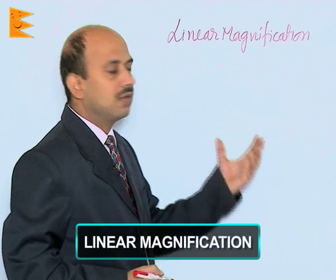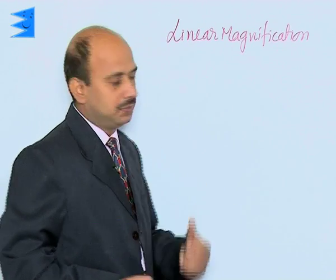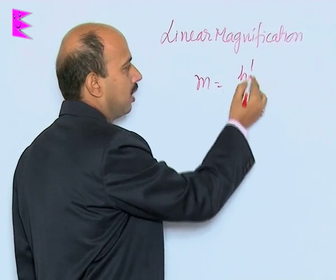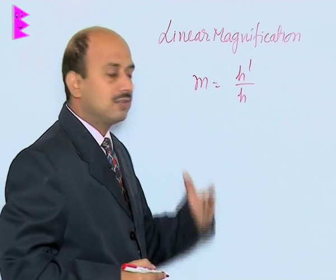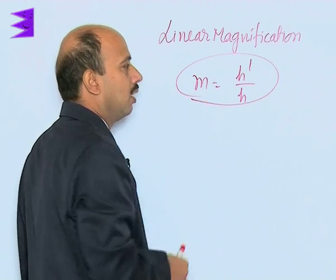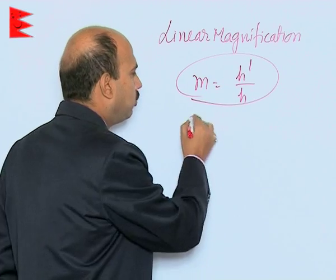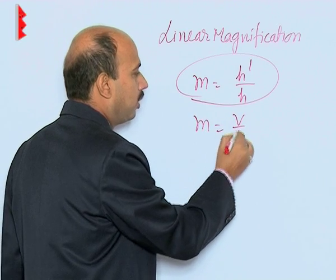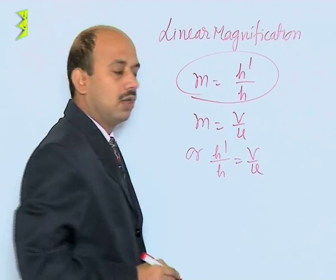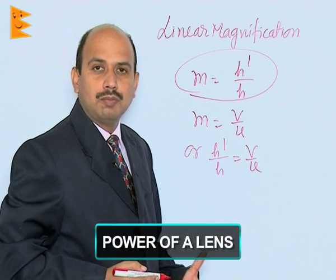Now, linear magnification. Linear magnification is actually defined as the ratio of height of image to the height of the object. So we can write m = h' / h, where h' is the height of the image and h is the height of the object. Using the previous diagram used in the lens formula derivation, we can also derive that m = h' / h = v / u. This magnification has no units because it is the ratio of two same quantities.